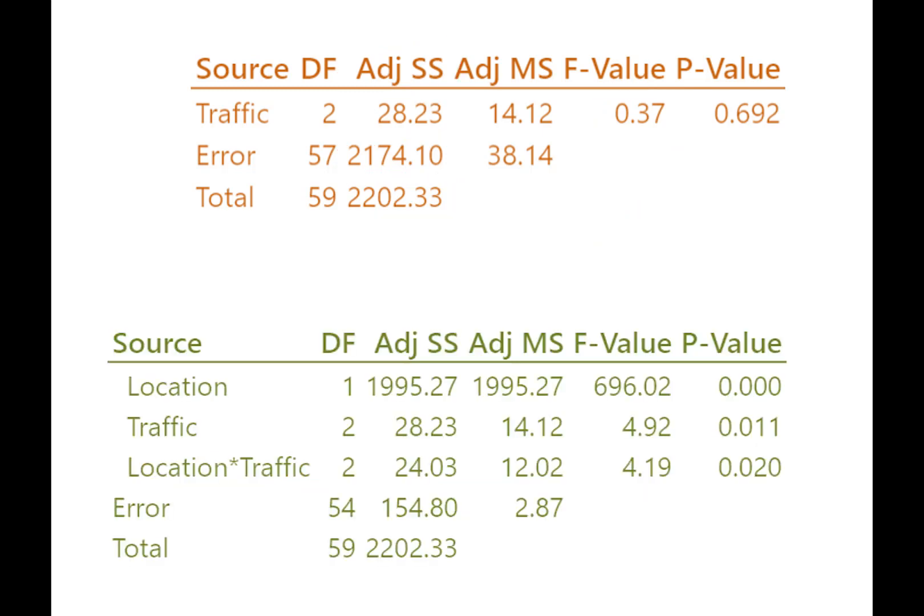All right, now I've added the multi-factor ANOVA table down on the bottom. And we're going to start just by looking at what's in common. Well, three of our lines are in common. We have the traffic line, error, and total. Those are all in the single factor ANOVA. Also, as we go across the row for, let's say we'll start with traffic, look, compare the single factor ANOVA with the multi-factor ANOVA.